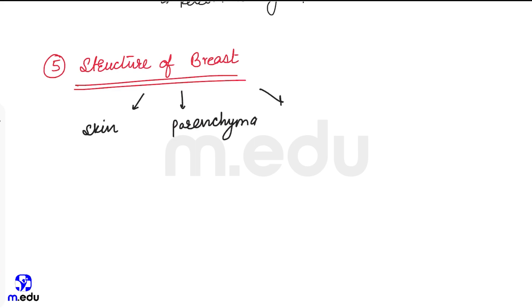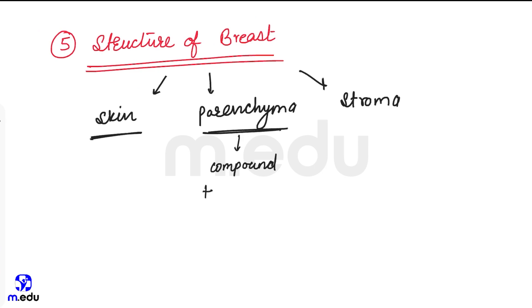So skin is nothing but the covering of the gland and nipple. Parenchyma is compound tubulo-alveolar gland, and stroma is nothing but the supporting framework of the gland, supporting framework of gland.